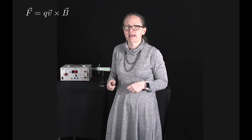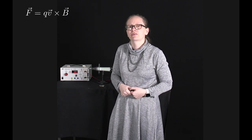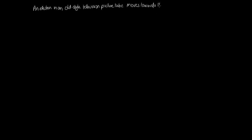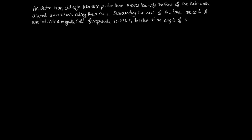Let's look at an example problem that we can solve with the equation F = QV × B. The question is: an electron in an old-style television picture tube moves towards the front of the tube with a speed of 8.0 × 10⁶ m/s along the x-axis. Surrounding the neck of the tube are coils of wire that create a magnetic field of magnitude 0.025 teslas directed at 60 degrees to the x-axis and lying in the x-y plane.